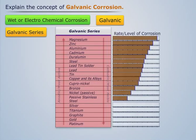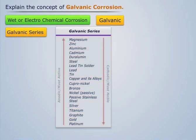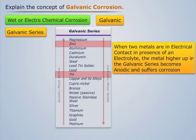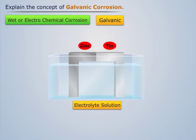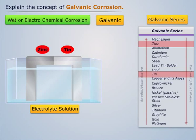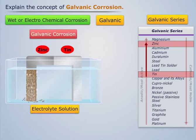When two metals are in electrical contact in the presence of an electrolyte, the metal higher up in the galvanic series becomes anodic and suffers corrosion. For example, if zinc and tin are connected in the presence of an electrolyte, then in accordance with the galvanic series, zinc will undergo corrosion as it is placed higher than tin in the galvanic series. This type of corrosion is known as galvanic corrosion.